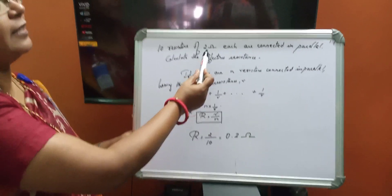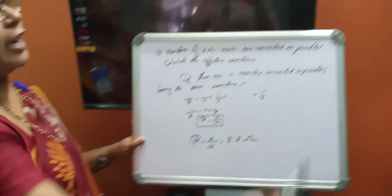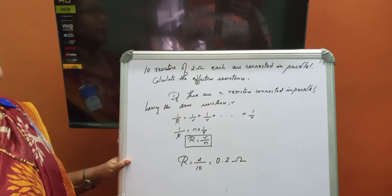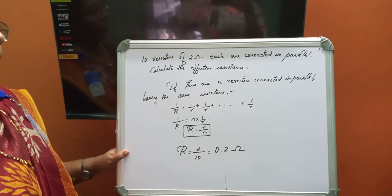Next question, 10 resistors of 2 ohm each are connected in parallel, calculate the effective resistance. So, you have to study a formula there.